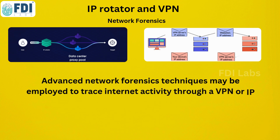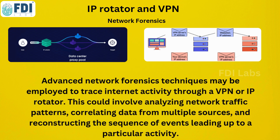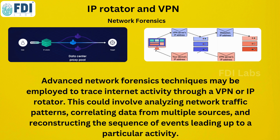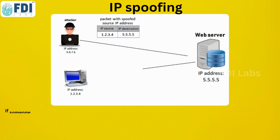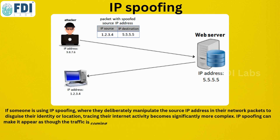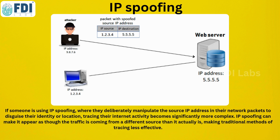In the realm of sophisticated network forensics, even when users attempt to conceal their activities behind VPNs or IP rotators, experts employ advanced tools to monitor online activity. They decipher network traffic patterns, compile information from multiple sources, and reconstruct timelines. IP spoofing involves individuals intentionally manipulating the source IP address in their network packets to hide their identity or location, making tracing their internet activity particularly challenging as the true origin of traffic is obscured.